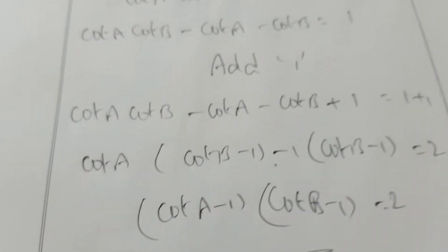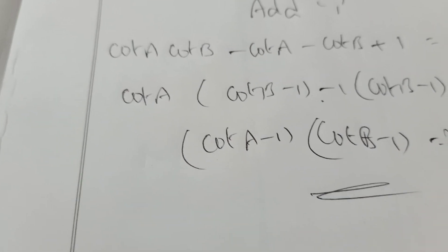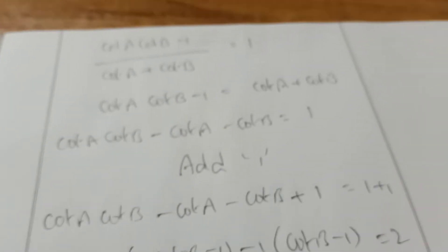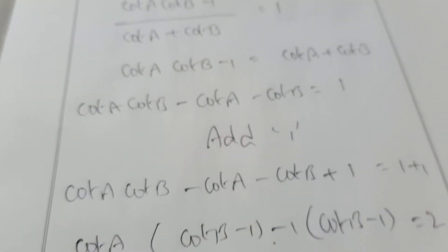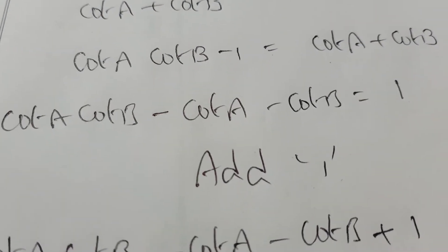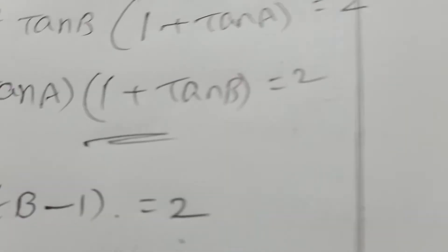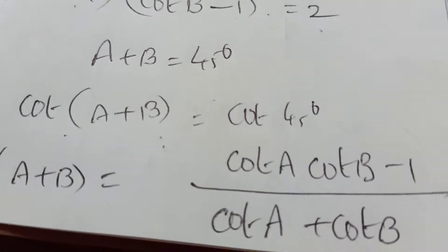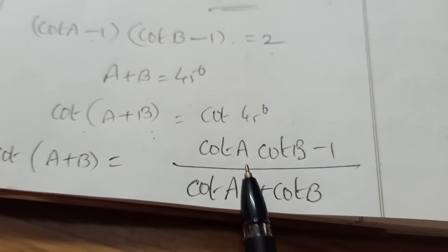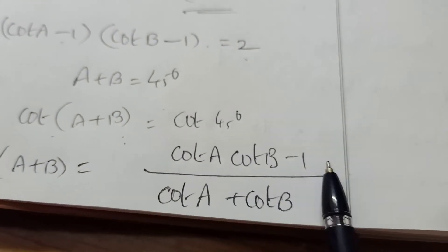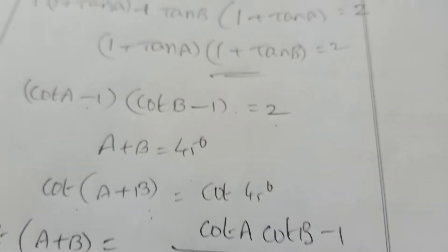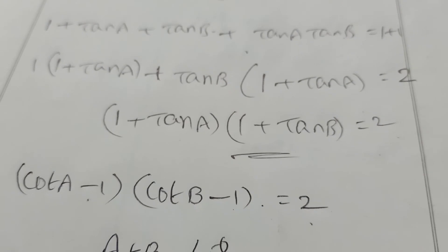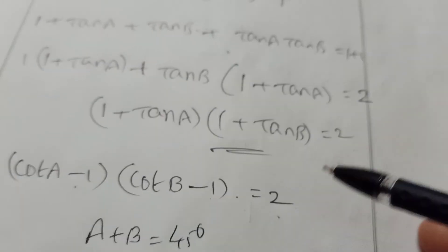Equal to 2 — that is our answer. You should know the cot formula: cot of A plus B equals cot A cot B minus 1 divided by cot A plus cot B. This is a very important formula. You should prove this.